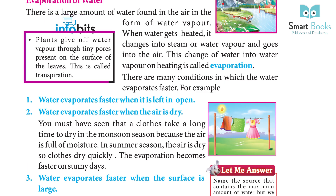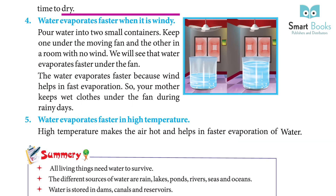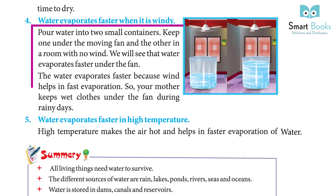Plants give off water vapor through tiny pores present on the surface of the leaves. This is called transpiration. Water evaporates faster when it is windy. Pour water into two small containers — keep one under a moving fan and the other in a room with no wind. Water evaporates faster under the fan because wind helps in fast evaporation.